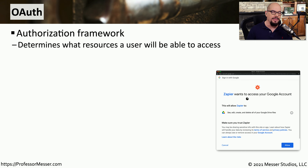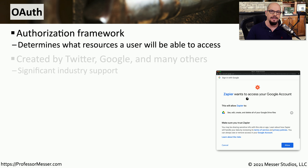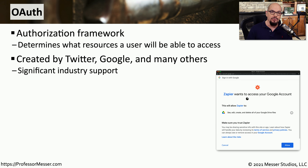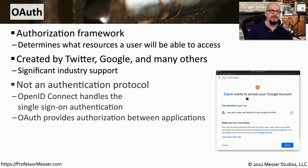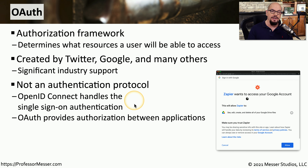A more common way to provide authentication and authorization for our mobile devices and browsers is to use some newer types of protocols. These newer standards consist of OpenID Connect and OAuth. OAuth is a framework that allows us to control what types of resources a third party application may be able to access. This framework was created by Google, Twitter, and a number of other companies, and it has very broad support in the industry. Unlike SAML, which provided authentication and authorization, OAuth is usually used in conjunction with OpenID Connect.